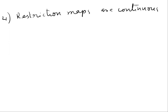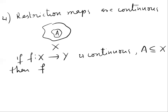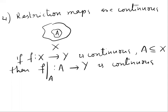What do you mean by restriction? Suppose the domain is X and you have a subset A. If the function is defined on the domain X, the restriction will be on the set A. That is, if f from X to Y is continuous and A is any subset of X, then we have to prove that the restriction map f restricted to A, from A to Y, is continuous.